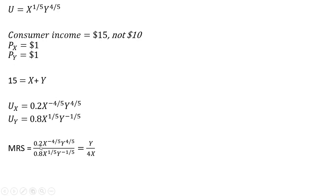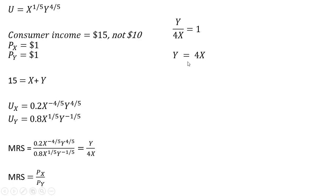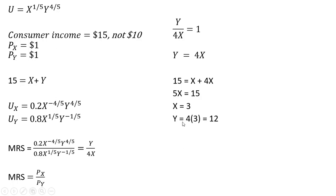Simplifying: 0.2 divided by 0.8 leaves us with 4 in the denominator, and following the rules of exponents we get Y divided by X, so MRS = Y/(4X). To maximize utility, the marginal rate of substitution equals the price of good X divided by the price of good Y. Given that the price of each good is $1, we set Y/(4X) equal to 1, so Y equals 4X. Plugging this into the budget constraint, X equals 3 and Y equals 12.